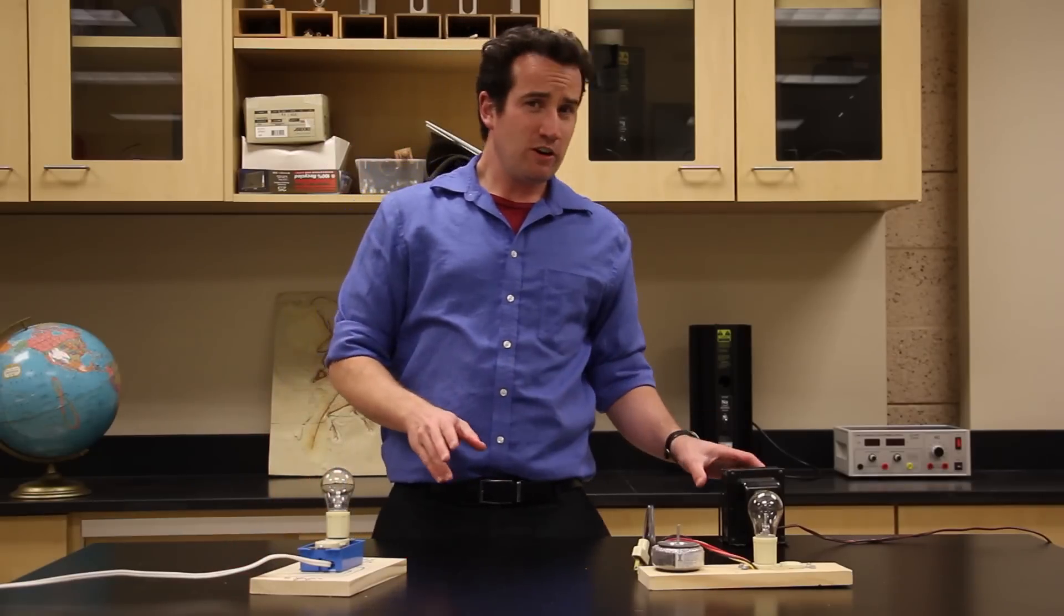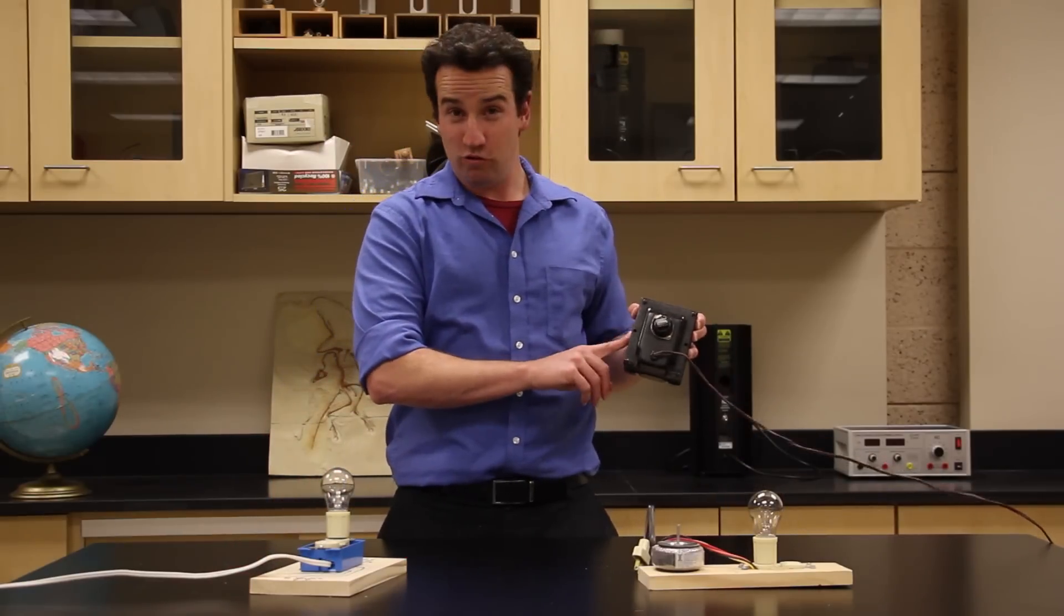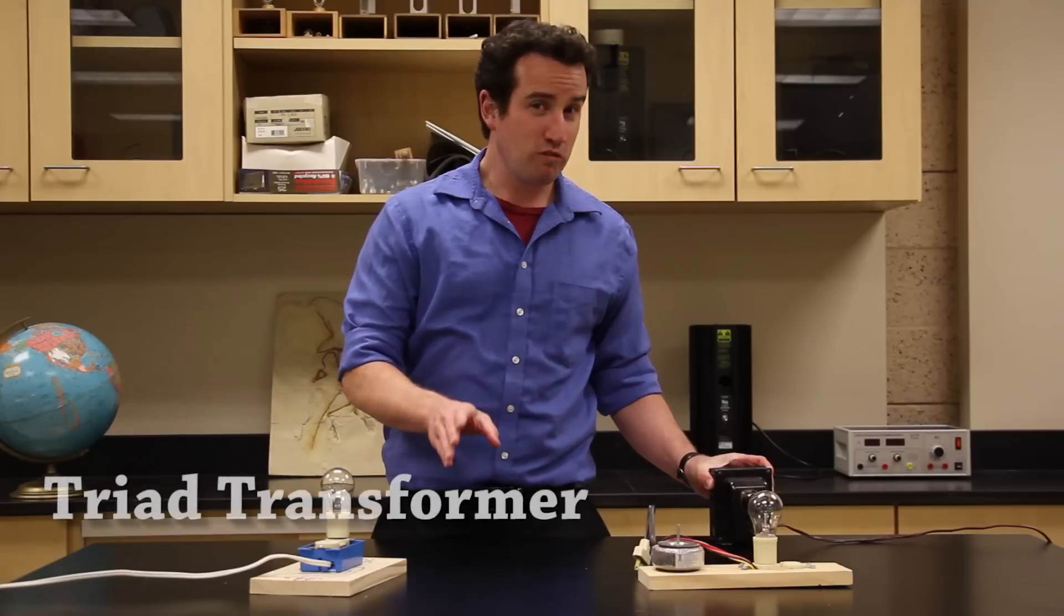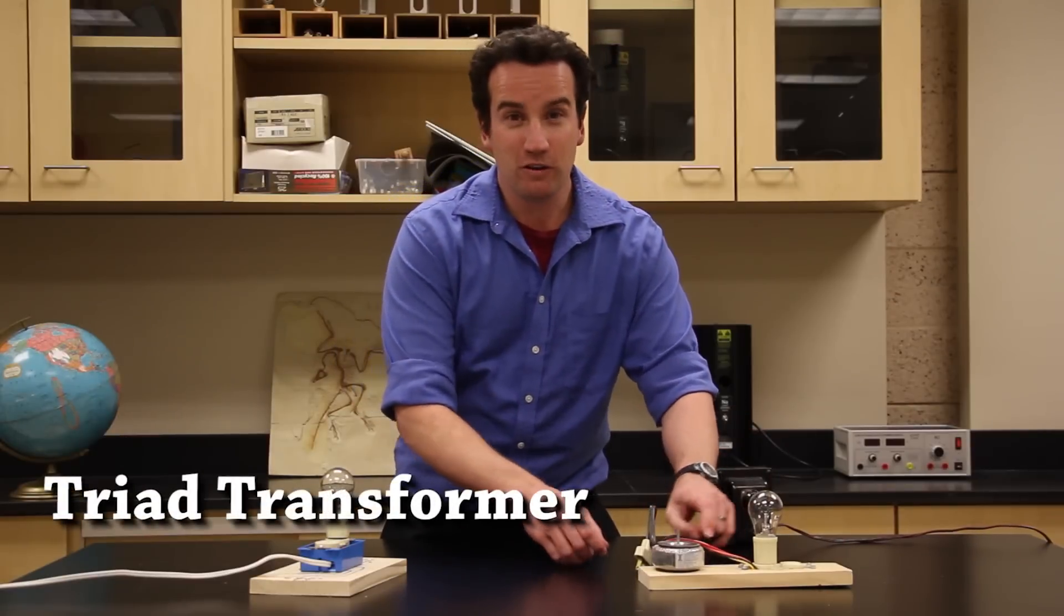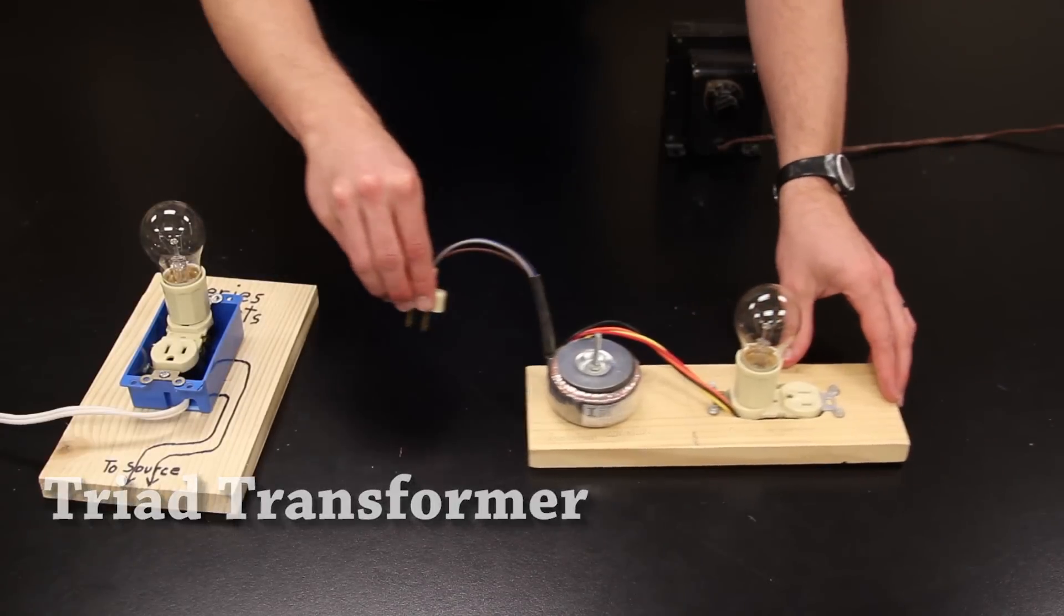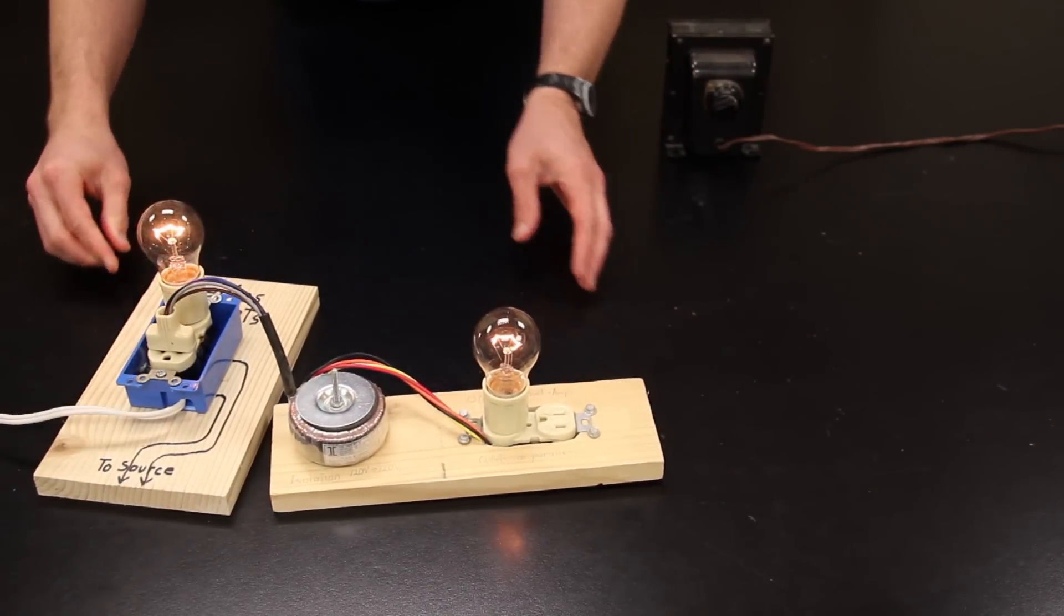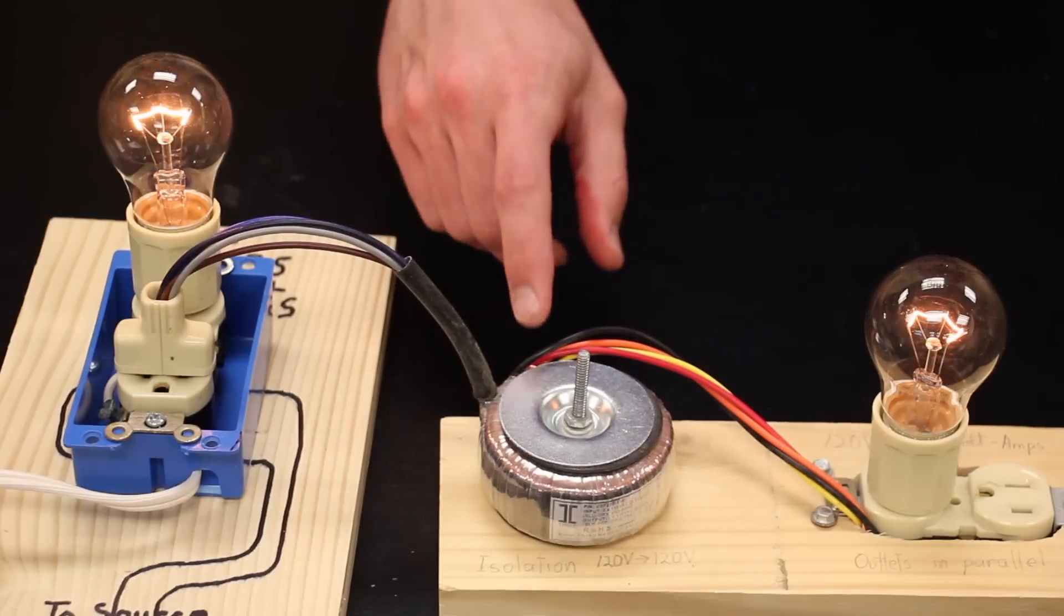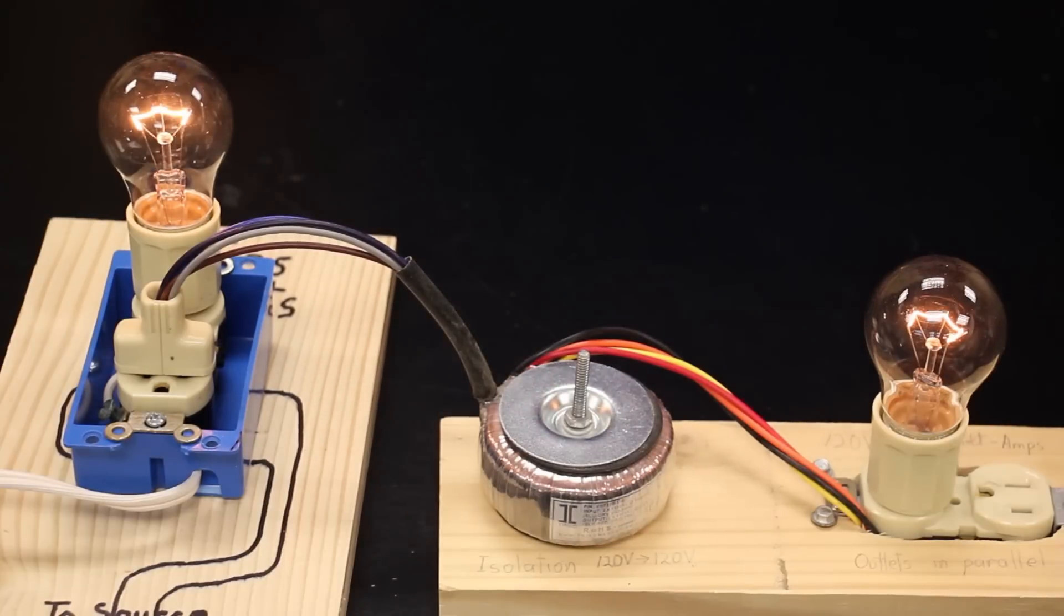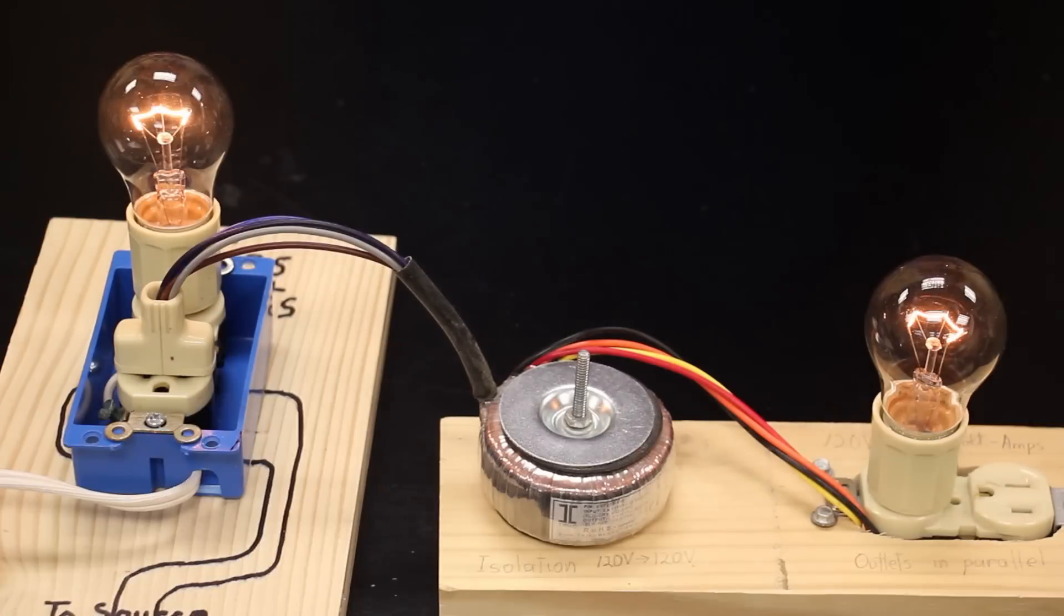If you don't already own an isolation transformer, you can buy a small triad transformer for about $20. Its only shortcoming is it has a small power rating and should only be used with bulbs of less than 25 watts.